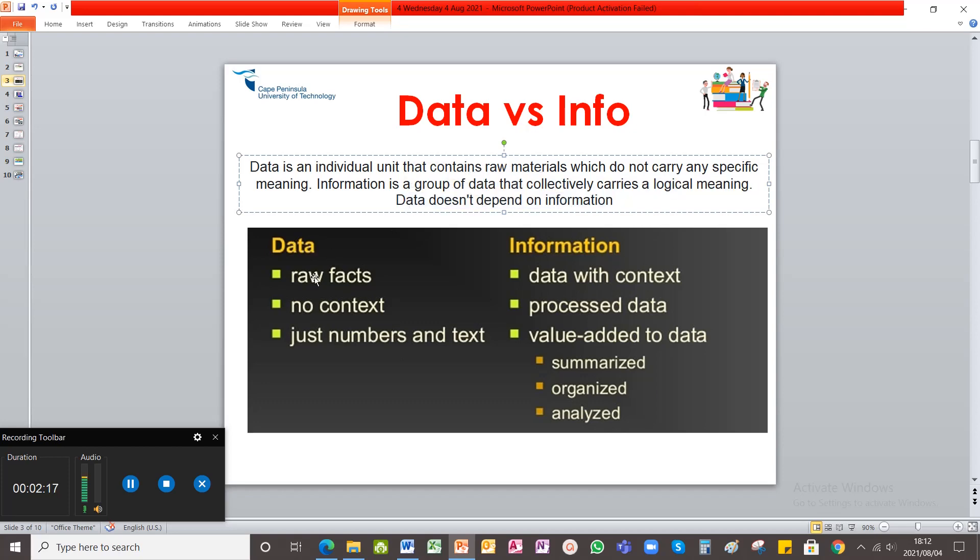And now it has meaning. So data doesn't depend on information, but information depends on data. So here you can see data is just raw facts, no context, just numbers or text with no meaning, which is then manipulated and converted into information. And now it has context, it was processed and it has value. Either because you summarized the data, you analyze the data and you organize the data. Now it becomes information.